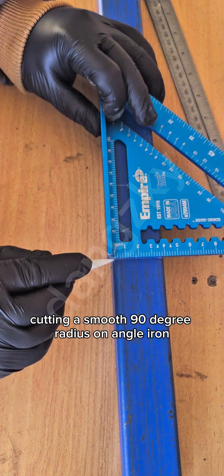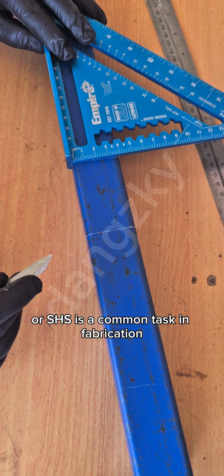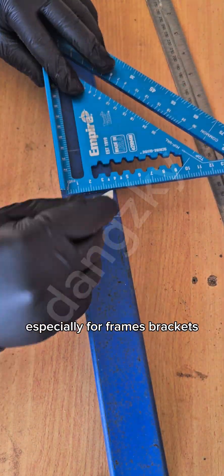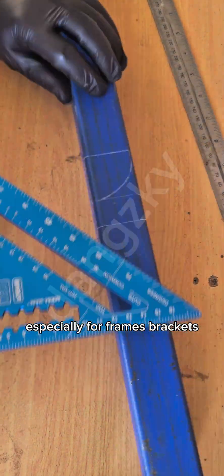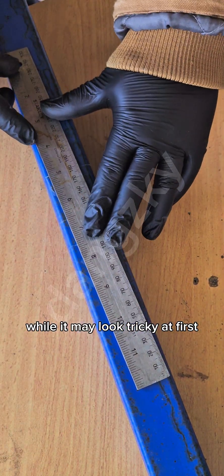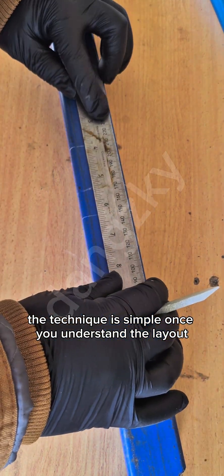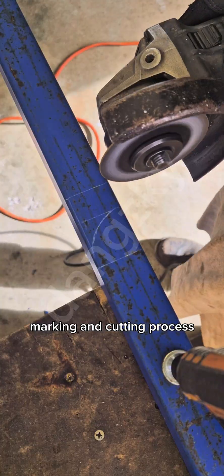Cutting a smooth 90-degree radius on angle iron or SHS is a common task in fabrication, especially for frames, brackets, balustrades, and custom steel projects. While it may look tricky at first, the technique is simple once you understand the layout, marking, and cutting process.